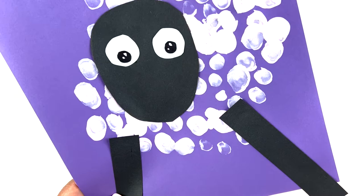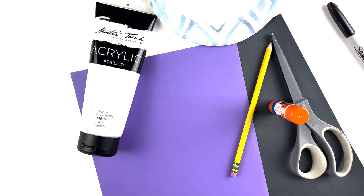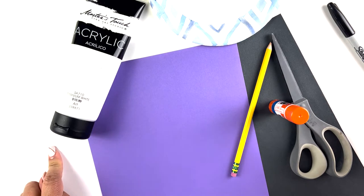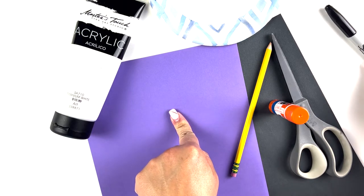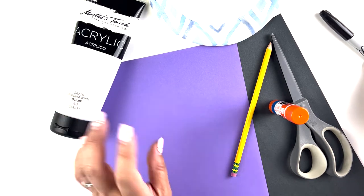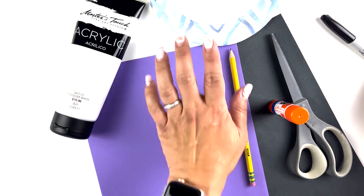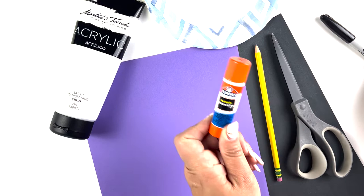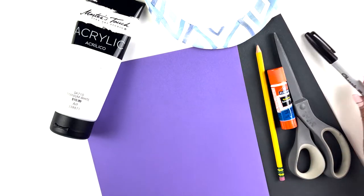Today we're gonna paint some sheep. We're gonna need some white paint, white paper, colored paper, something dark that the white can really pop with, a pencil, a paper plate, black construction paper, a glue stick, scissors, and a Sharpie.